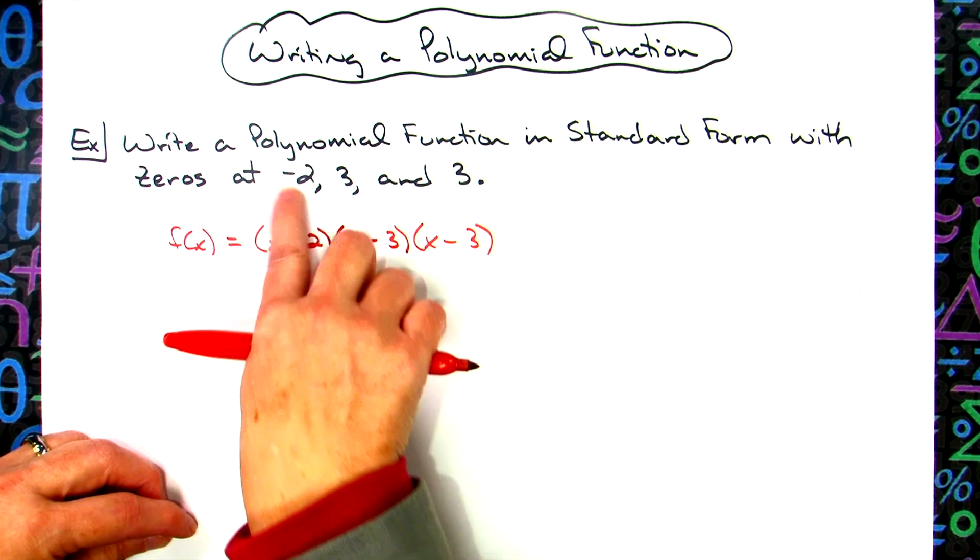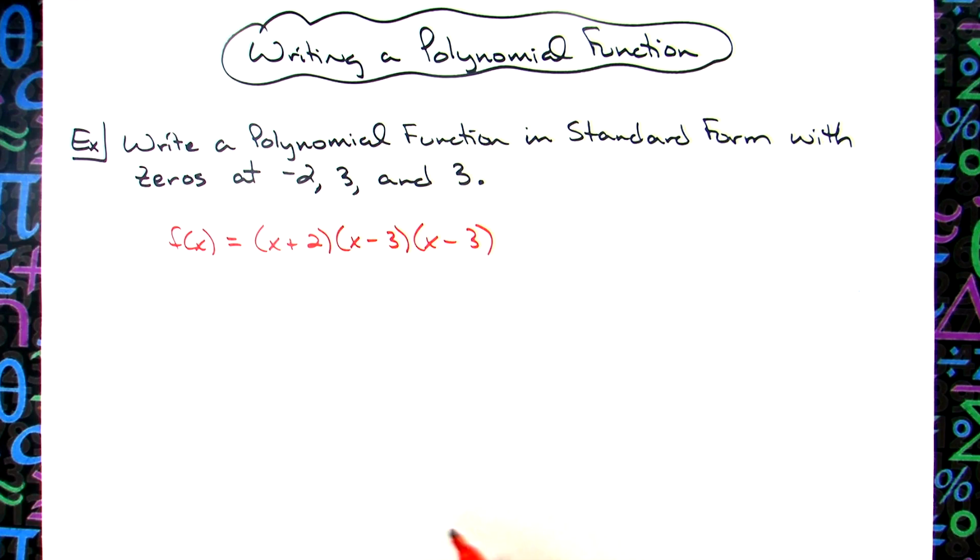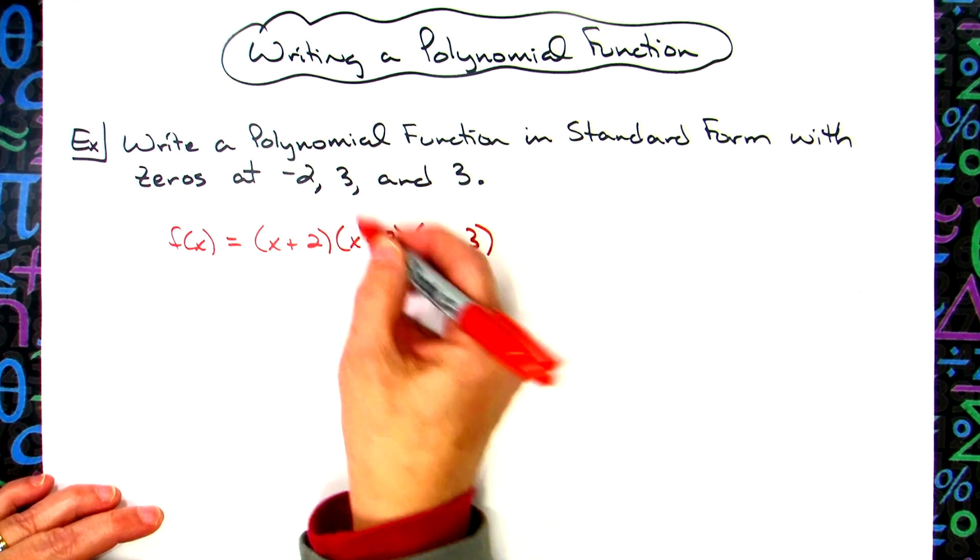Thus, this would have given me an x equals a negative two, an x equals a three, and an x equals a three. So going backwards, then you're just taking the opposite sign.